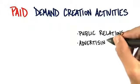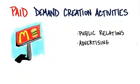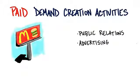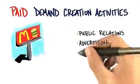Another common paid activity is advertising. What kind of advertising? It depends what my archetype reads. If they read a blog, I want to get keywords, banner ads, or something on that blog. If they read newspapers, tech journals, or listen to radio or television, I want to match my demand creation activities to what I know about my archetype. I'm not just going to randomly do this — I'm going to try to match what I know to what I'm going to pay for.